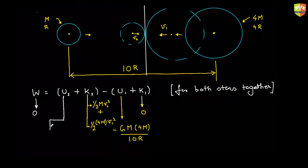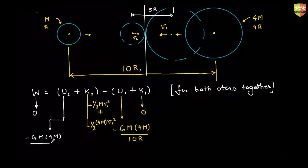U₂ is not zero — it would be zero only if both stars were infinitely far apart. At the moment of collision the center-to-center distance is 4r + r = 5r, so U₂ = −4GM²/(5r). This equation has two unknowns: v₁ and v₂. With only one equation we can't solve separately, so we need a second equation.